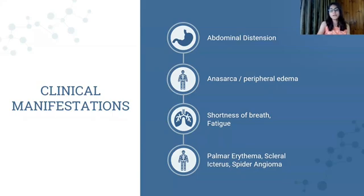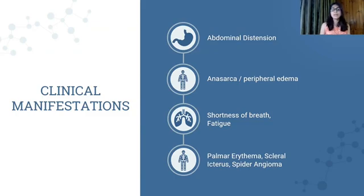A patient also feels shortness of breath. This can be due to two different mechanisms. The first is that the accumulation of fluid in the abdominal cavity pushes up against the diaphragm, causing a reduced amount of space in the thorax available for the lung to expand, causing shortness of breath. The second is called hepatic hydrothorax, wherein the fluid from the abdominal cavity diffuses into the thorax, and possibly even into the pleural cavity, causing shortness of breath.